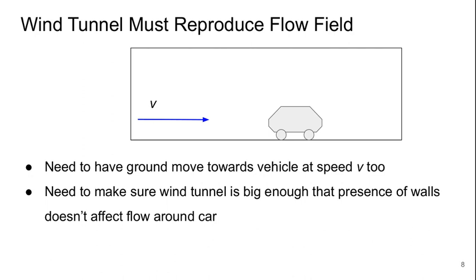We left off thinking about what we had to do in a wind tunnel to reproduce the external flow field. The two key points are: first, we need to have the ground moving towards the vehicle at speed v, as well as the flow right in the vehicle. In the real external flow situation, the ground is stationary and the air is stationary, so both are moving towards the vehicle at speed v in the frame of reference that moves with the vehicle. We need to do the same thing in our wind tunnel if we want to reproduce the flow field accurately.